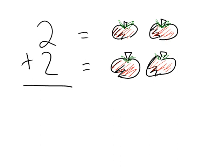So now we have our math problem. We have 2 plus 2. So what does that mean? Let's go ahead and count these. So we have 1, 2, 3, 4. So 2 plus 2 is going to equal 4 apples.